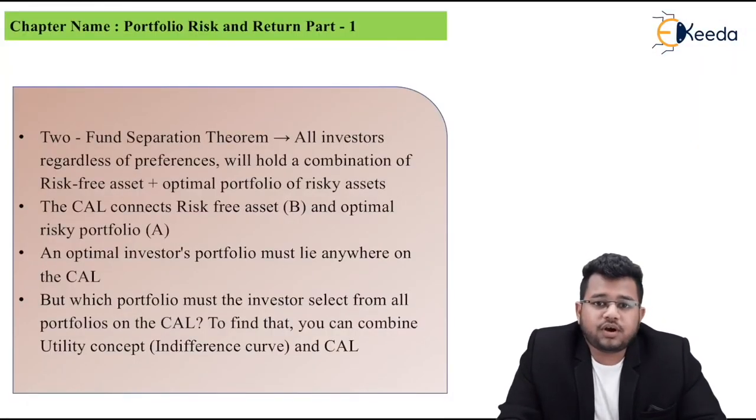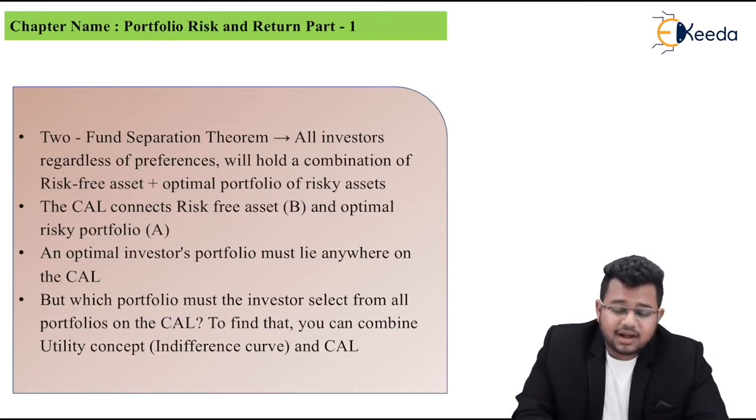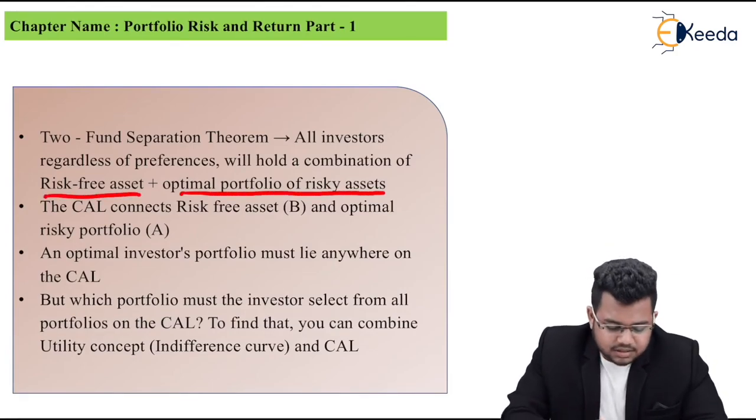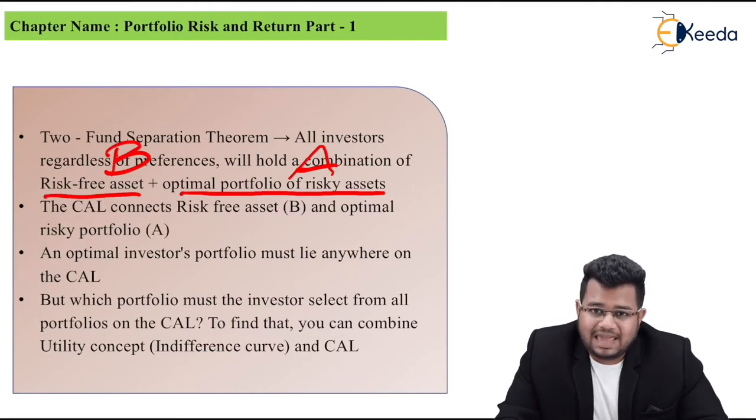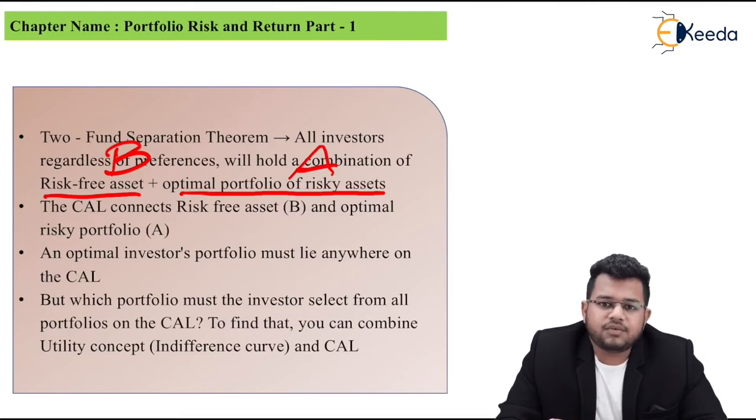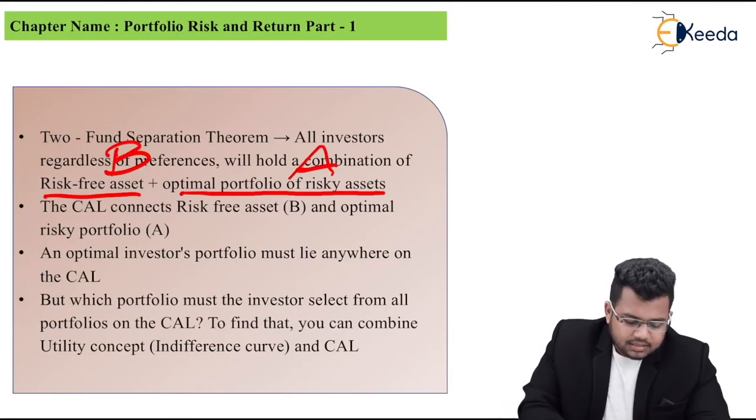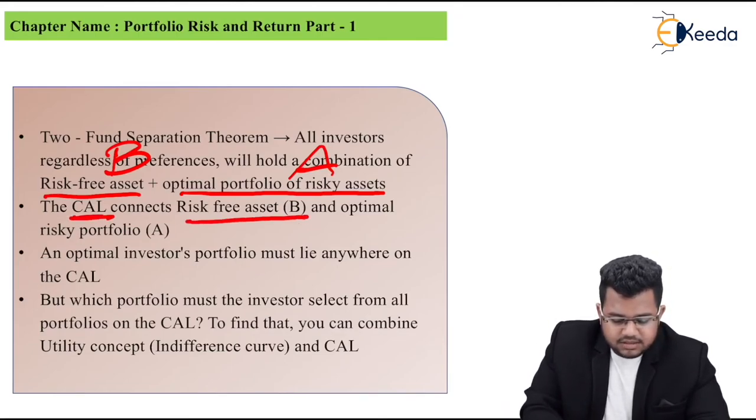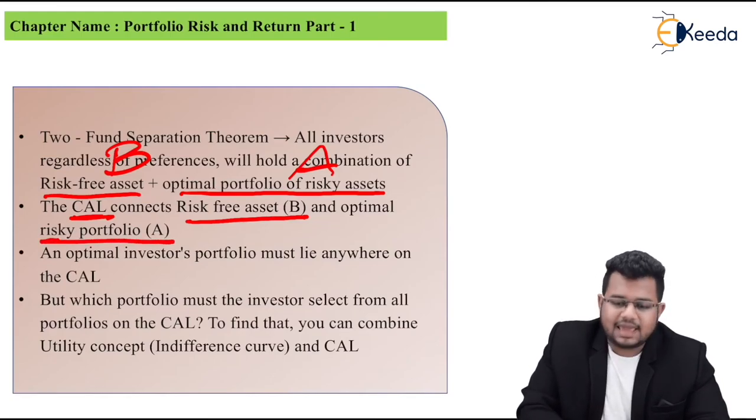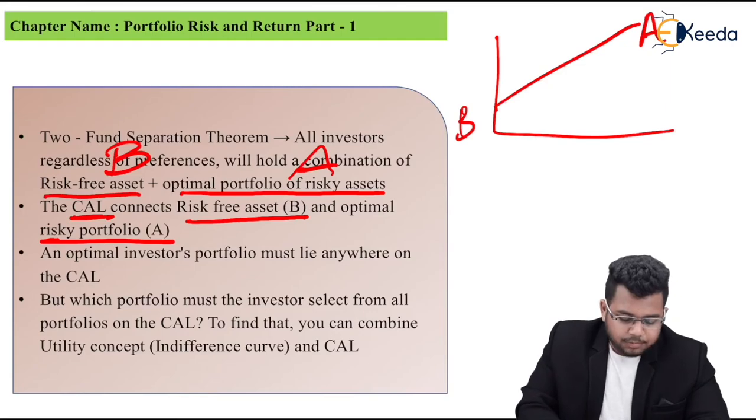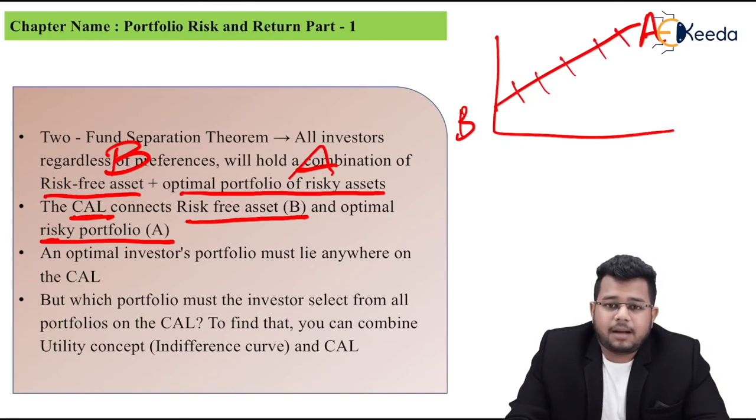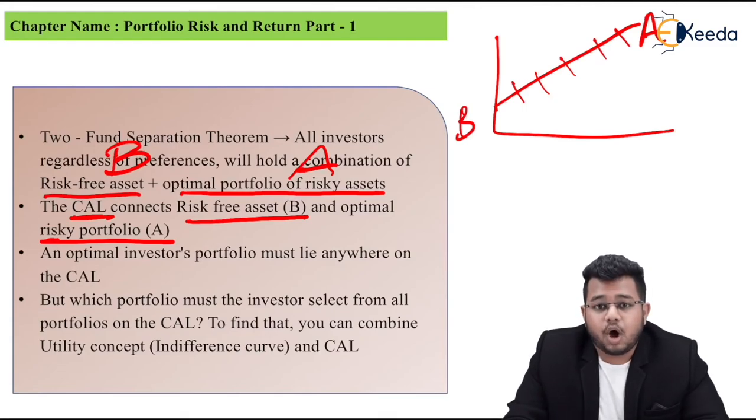Next concept you need to know is Two Fund Separation Theorem. All investors, regardless of their preferences, will hold a combination of risk free asset plus optimum portfolio of risky assets. Like in the case you saw, risk free asset was B, and optimal portfolio was A. That means one risky asset portfolio A and one risk free security B, any investor will hold this, this is assumed. The CAL, capital allocation line, connects the risk free asset which is B and optimal risky portfolio which is A. B was connected to A in this diagram. This was only B and this was A. The optimal investor's portfolio must lie anywhere on the CAL. Look, here or here or here or here, anywhere. On this CAL, your portfolio can lie, and whichever portfolio it is, we will call it optimal portfolio.